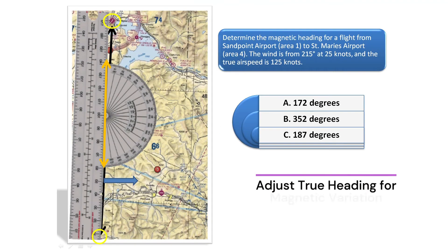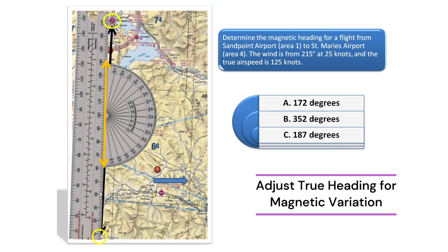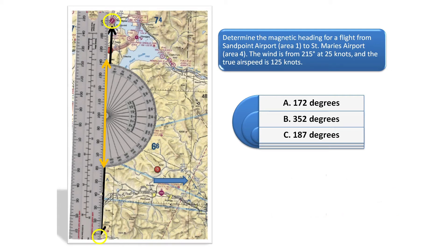There is one more step we need to take to find the correct magnetic heading for this flight. See the red dashed line at the bottom right hand of the chart. This line represents an isogonic line for magnetic deviation. Due to magnetic variations, depending on where you are located, a pilot needs to adjust for magnetic variation.